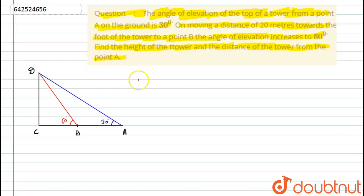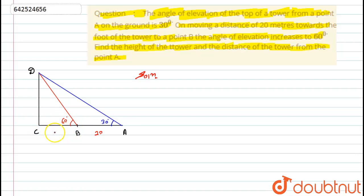So let's start with the solution. Here I have drawn the diagram. DC is nothing but the tower. When we are seeing from the top of the tower onto the ground point A, the angle of elevation is 30 degrees. Similarly, on moving 20 meters towards the tower, there at point B, the angle of elevation increases to 60 degrees. We have to find the distance CB — let this be X — and also the height of the tower DC — let this be H.